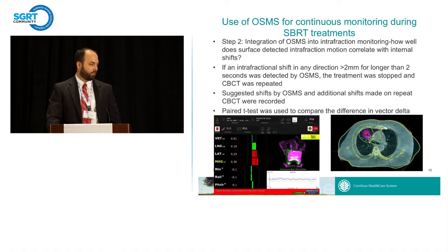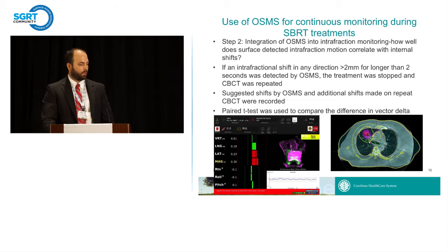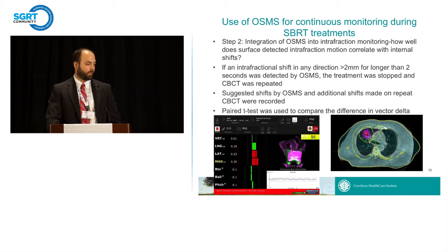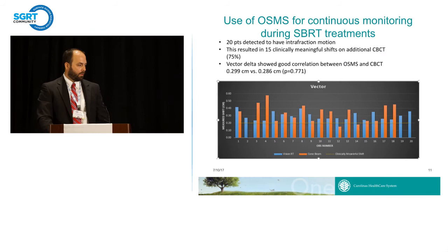Probably the more important reason to integrate OSMS into SBRT was for continuous monitoring, as most of us do for other treatment types. There wasn't much data beyond SRS on how well it correlated with internal shifts during interfraction monitoring. We set a very low beam hold threshold of two millimeters — intentionally — since our standard PTV margin is five millimeters, but we wanted to see if close monitoring would allow us to consider reducing margins. We also set a time threshold of two seconds because these patients are free breathing with respiratory cycle variability. We recorded suggested shifts by OSMS when patients went out of threshold and compared to shifts on repeat cone beam CT.